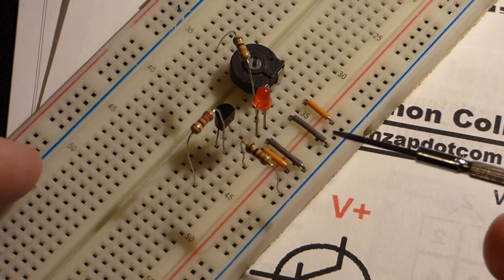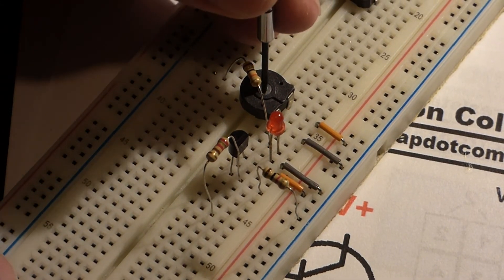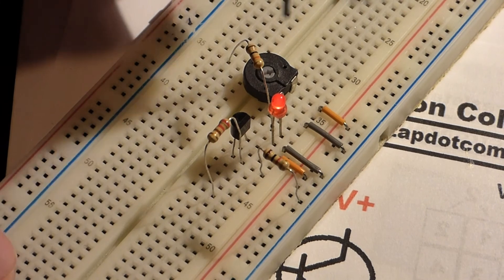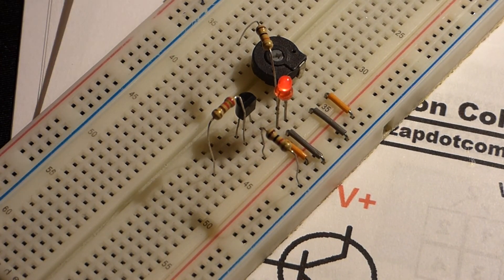Cathode comes to ground. And now when I turn up the voltage, you'll see that you can barely see the LED light up.